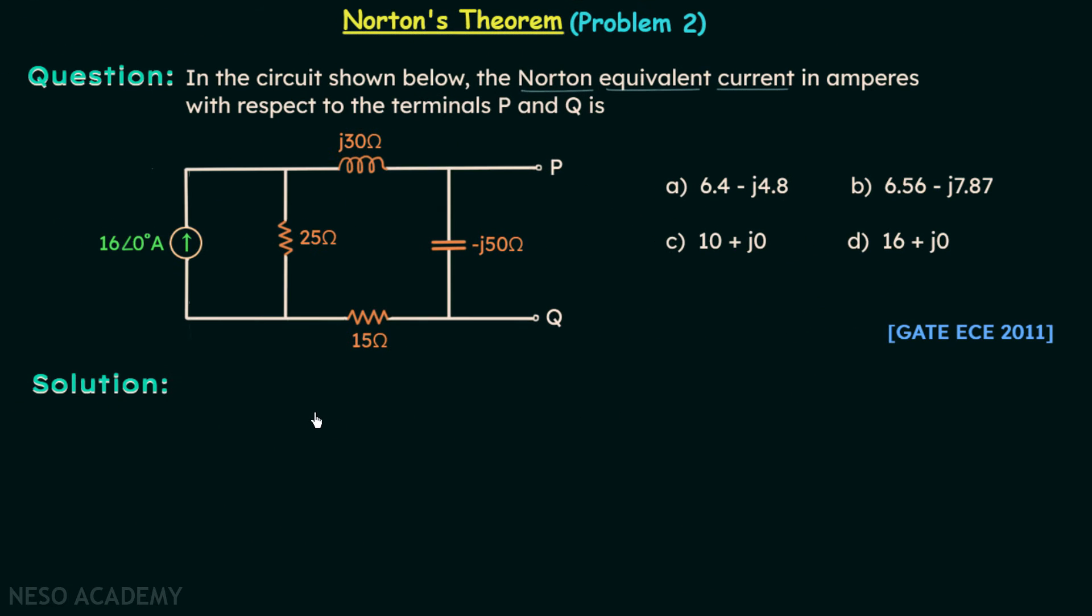So let us move on to the solution of this problem. To find out the Norton's equivalent current with respect to the two terminals, we will first short circuit the two terminals.